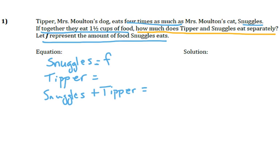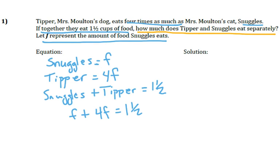Writing this out, we'd have Snuggles equals F. We know that Tipper eats four times as much as Snuggles, so we can write that as 4F. We also know that Snuggles and Tipper together — so if we add up how much they eat — it gives us one and one-half cups of food. So we have Snuggles, which is F, plus Tipper, which is 4F, equals one and one-half. We could combine the left side: F plus 4F is 5F, equals one and one-half cups of food.